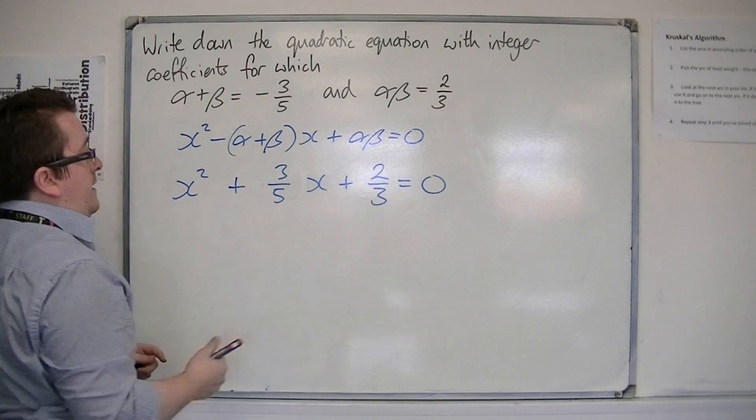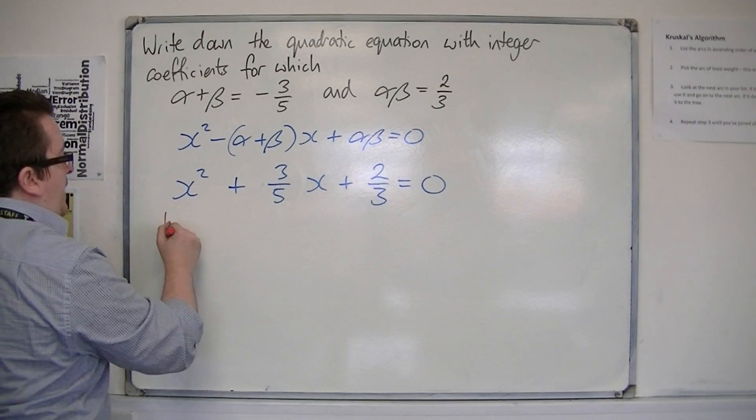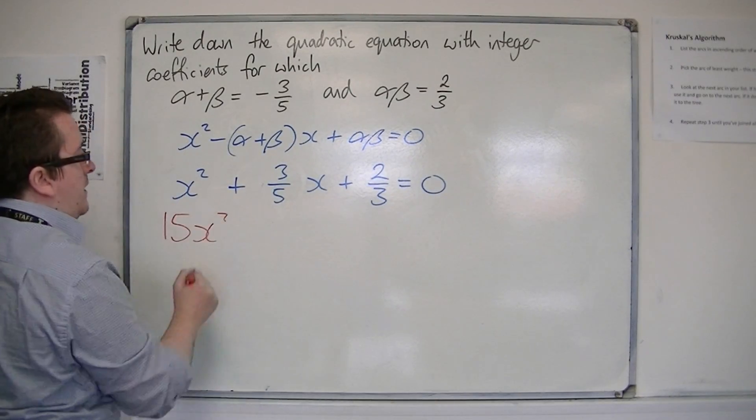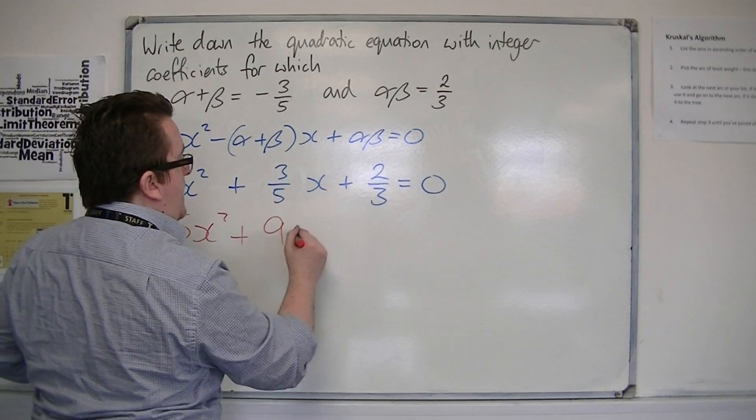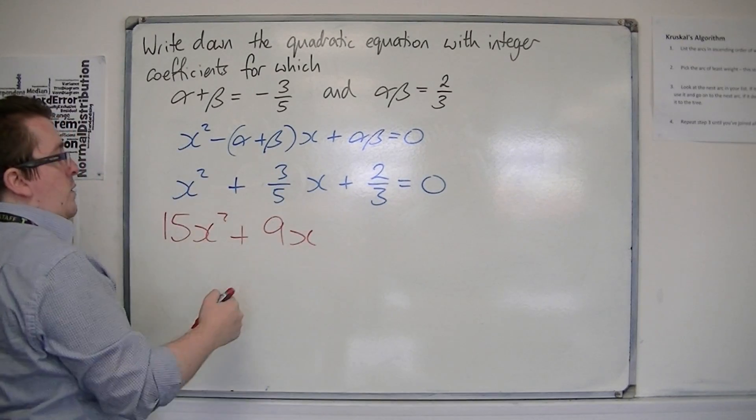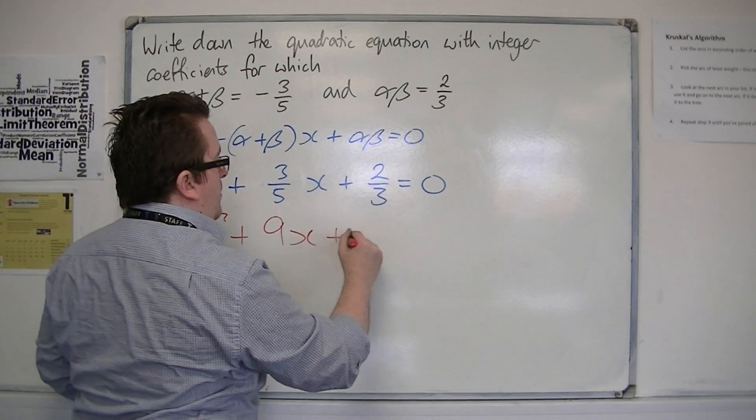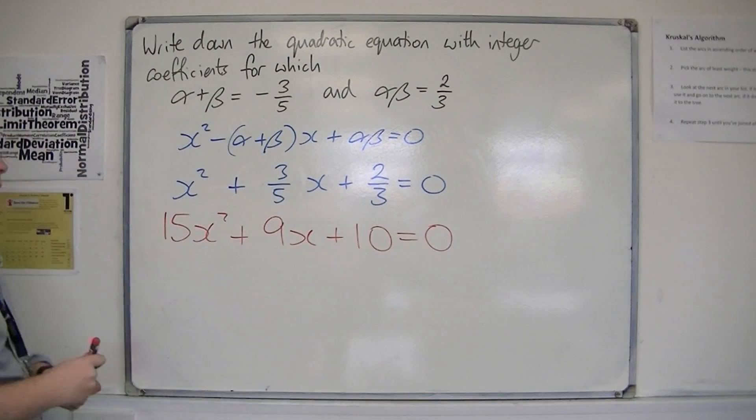Well, five times three, fifteen. And we're going to get 15x² plus 9x, because that's multiplied by three, that's multiplied by five, so I get plus ten equals zero.